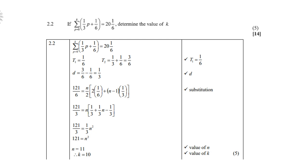Question 2.2: the sigma notation from p equals 0 to k, with general term one-third p plus one-sixth, equals 20 and one-sixth. Remember, 20 and one-sixth is the sum. To find k, first expand the series by substituting p with 0 to get one-third, then replace p with 1 to get one-sixth, and so on.